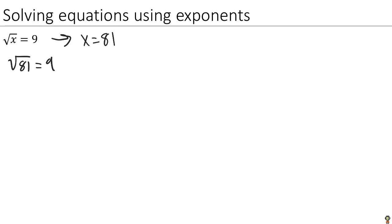But suppose we had something a little more complicated, like the square root of x minus 3 equals 9. This is something you could probably get if you stare at it long enough, but it would be nicer if we had a formal way to solve this. The key is going to be to use the rules of exponents and the way that they interact with radicals.